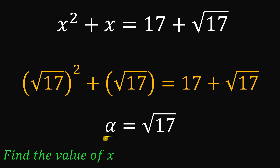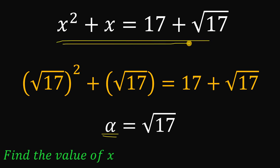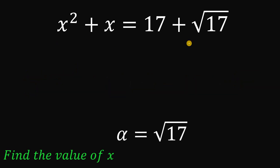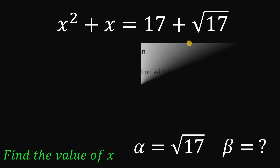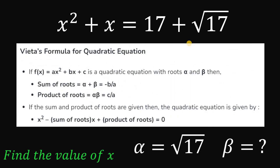Since we have a quadratic equation, there are two possible values of x. The first is the obvious answer: square root of 17. Now what is the other one? We'll call this beta. The question is how do we find the value of beta?